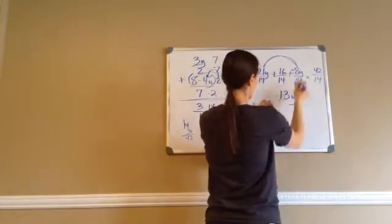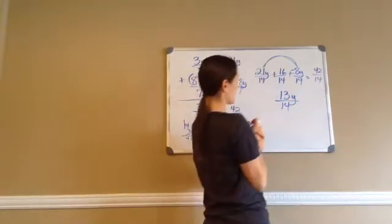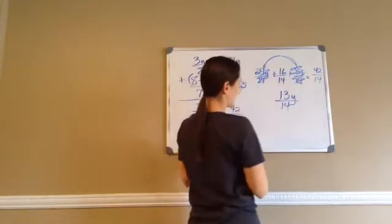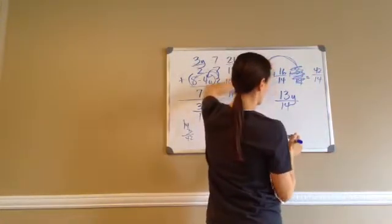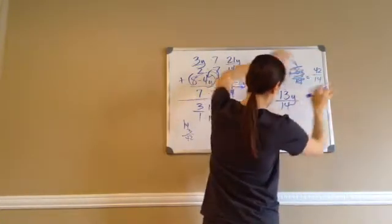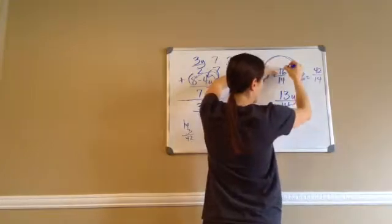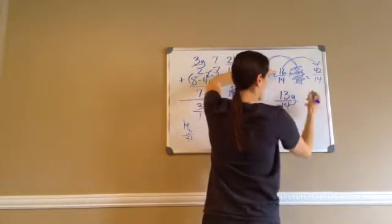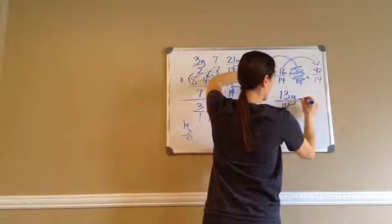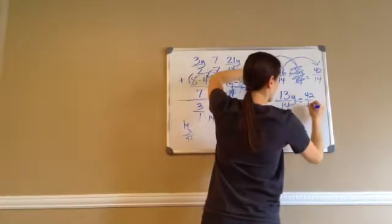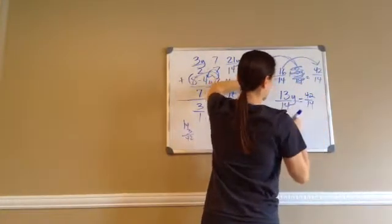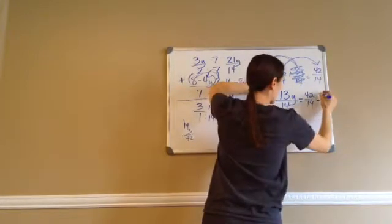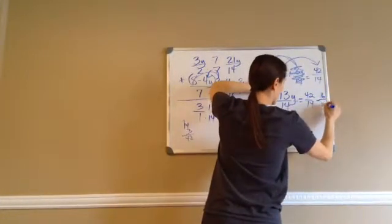So that's 13y over 14. Now I'm going to move things around — I want my y on this side. So I'm going to make this equal to 42 over 14. And this plus 16/14, I'm going to make it minus 16 over 14.